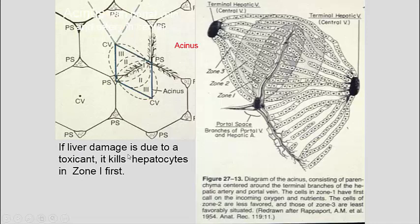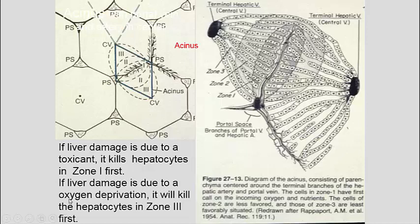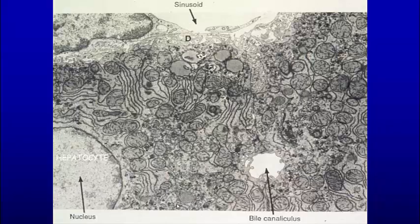If the liver is damaged due to toxin, it kills the hepatocytes in zone one first. So if you take a chunk of liver from a dead animal and zone one is deteriorated, that usually means some kind of toxic substance has been involved. However, if the liver is damaged due to oxygen deprivation — a toxin that ties up oxygen but is not directly toxic to the cell — then it will kill zone three. So the kind of toxin involved will dictate which zone is affected, allowing you to analyze the type of toxin using the acinus framework.